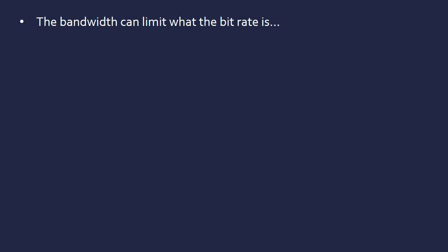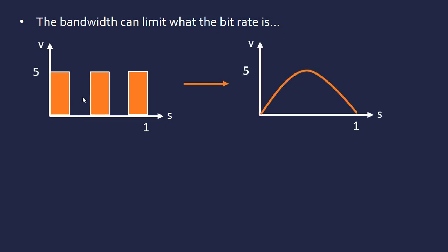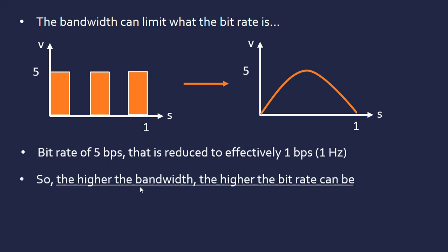Because bandwidth is the upper capacity of the network, it can limit what the bit rate is. The bit rate cannot be higher than the bandwidth. So if we're producing five bits per second but we can only accommodate one bit per second, if this wireless router can only deal with one bit per second, we're limiting our actual bit rate because we're constrained by the bandwidth.